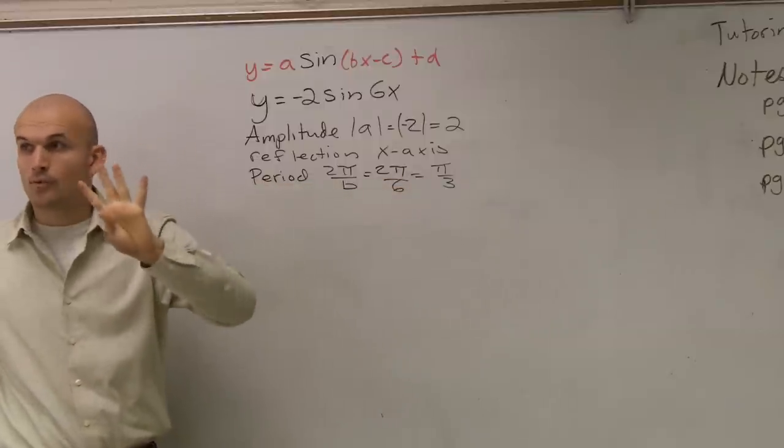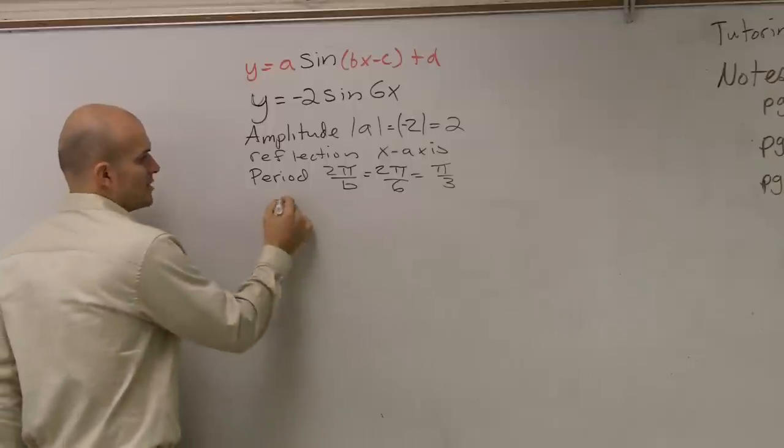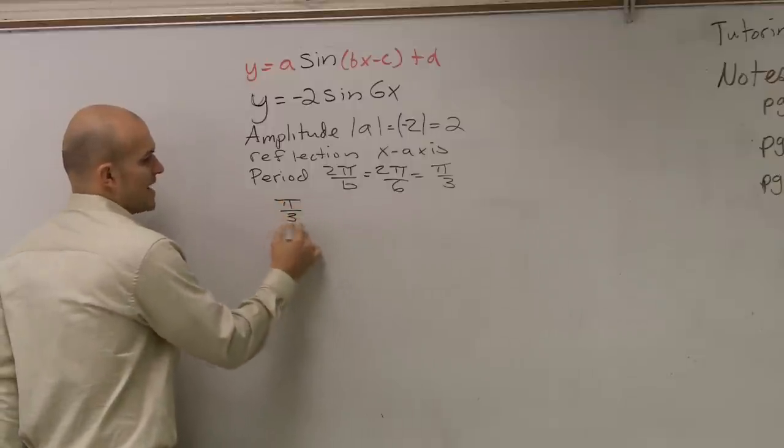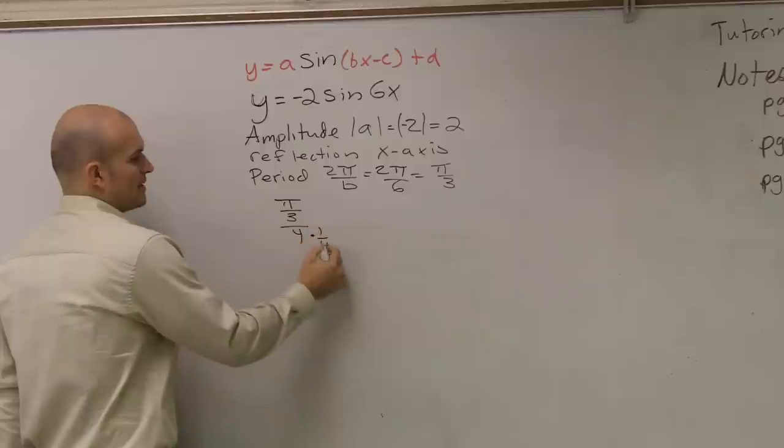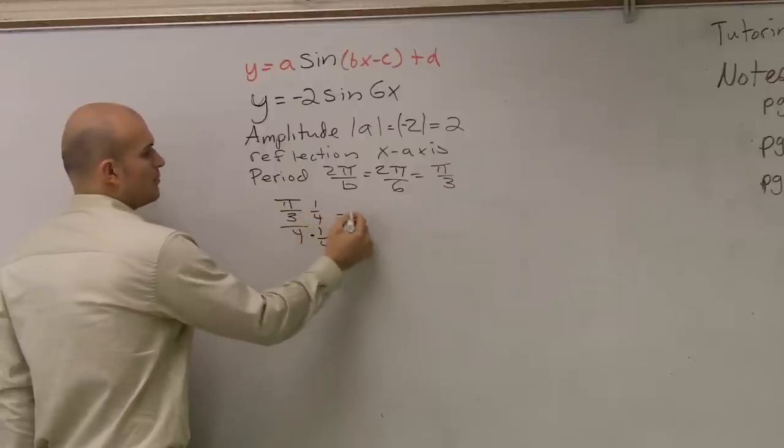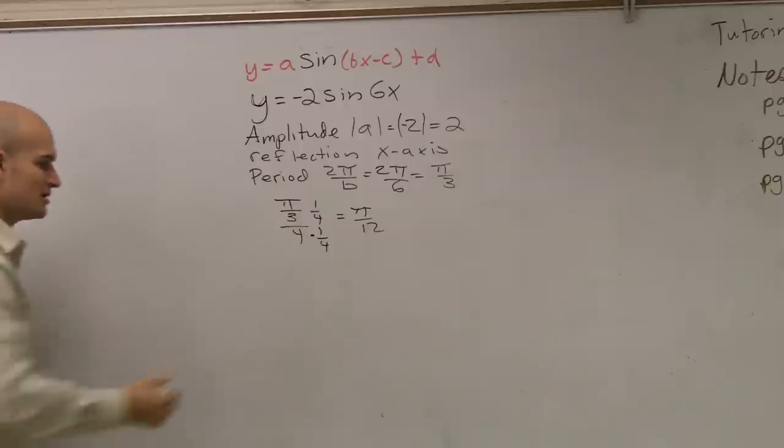So, if my period is pi over 3, I have, remember, 4 important points in a period. Right? So, what I always want to do is always want to take your period and divide it by 4. So, when I divide it by 4, now I have to multiply by the reciprocal. And the important points are pi over 12. And that's going to help me graph it. I'll show you why.